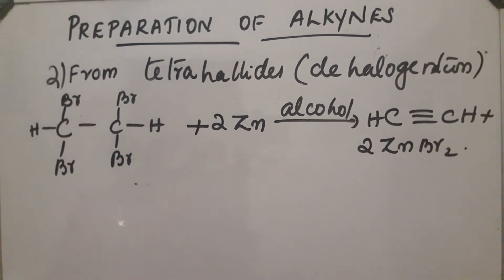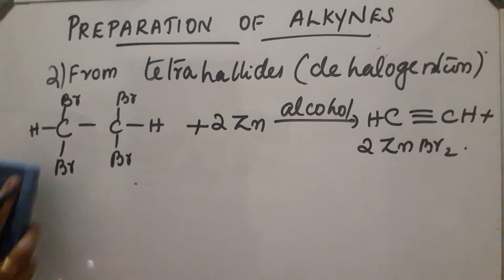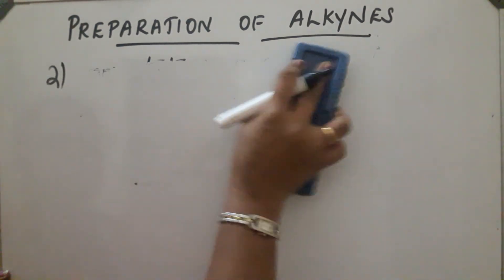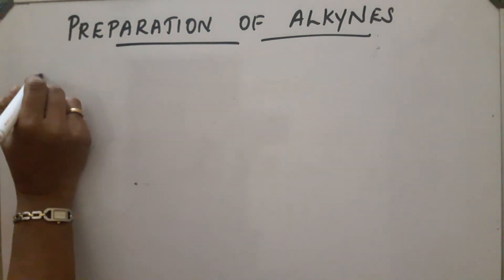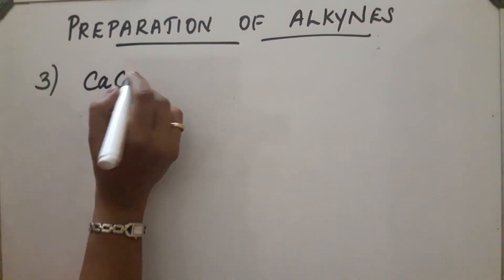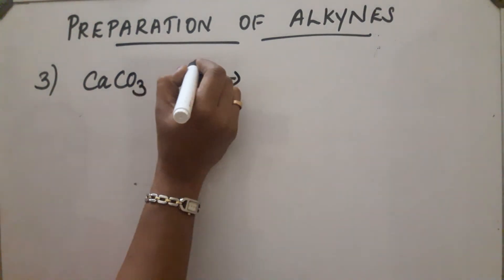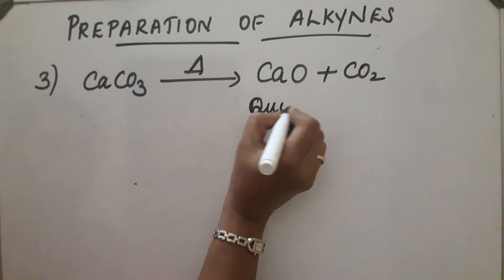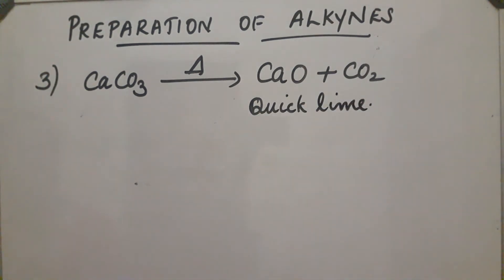The industrial preparation: we can obtain alkyne from calcium carbide. Calcium carbide on reaction with water gives an alkyne. First, we prepare calcium carbide. Limestone (CaCO3) on heating gets converted into calcium oxide (CaO) and carbon dioxide. This calcium oxide is also called quicklime.